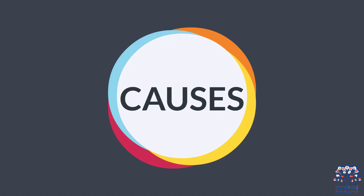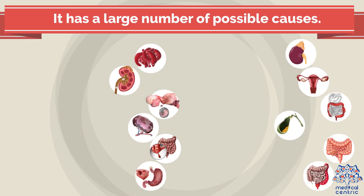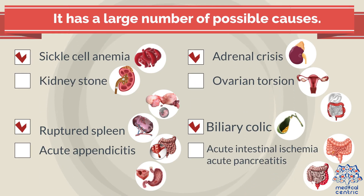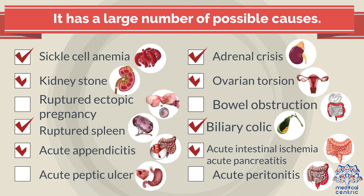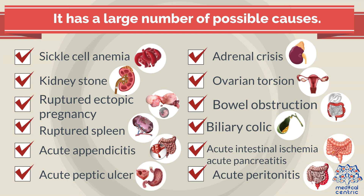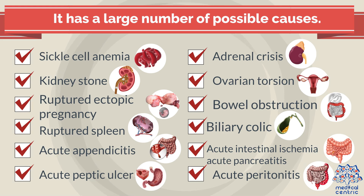Causes. Acute abdomen has a large number of possible causes, including sickle cell anemia, kidney stone, ruptured ectopic pregnancy, ruptured spleen, acute appendicitis, acute peptic ulcer, adrenal crisis, ovarian torsion, and bowel obstruction.